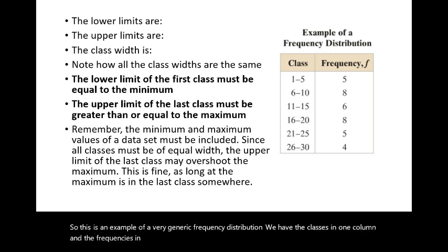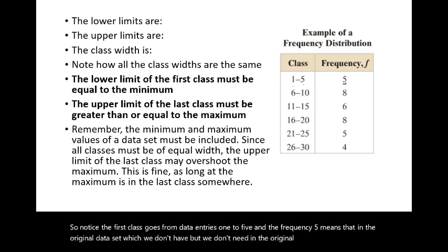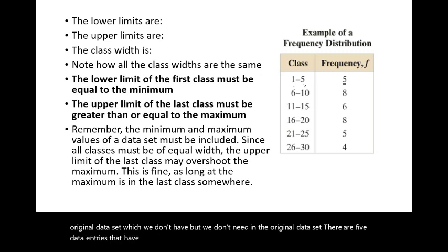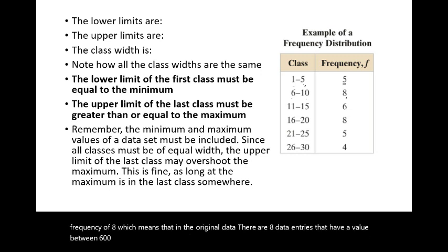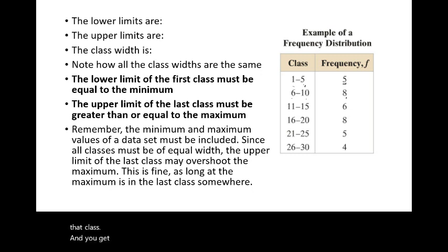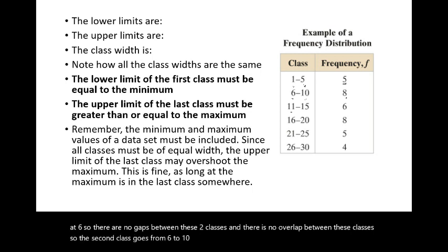Here is a generic frequency distribution example. The first class goes from 1 to 5 with a frequency of 5, meaning there are five data entries between 1 and 5. The second class is 6 to 10 with a frequency of 8. Notice that the first class ends at 5 and the second class starts at 6 — there are no gaps and no overlaps between any of the classes.